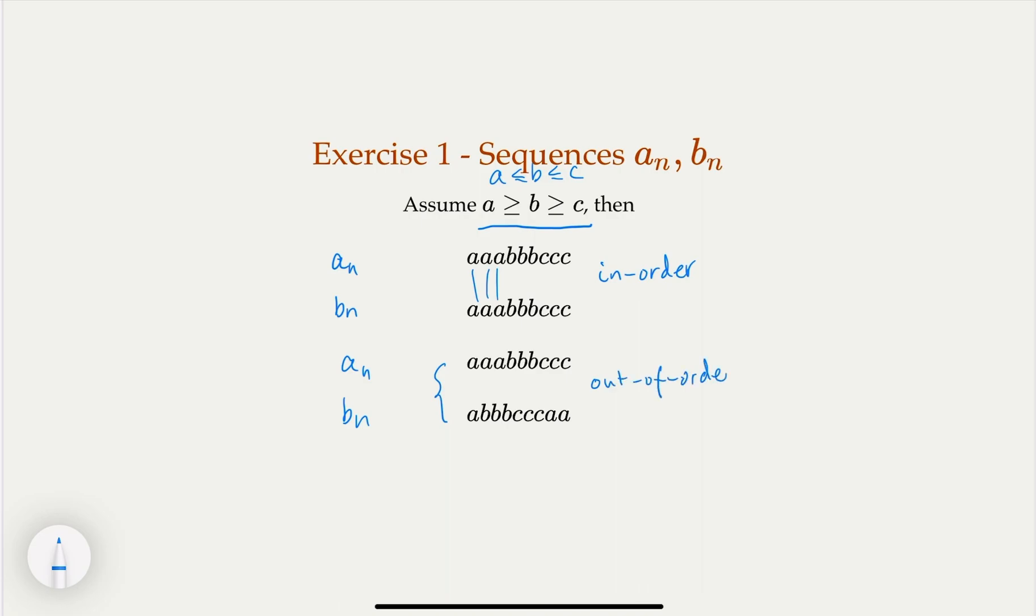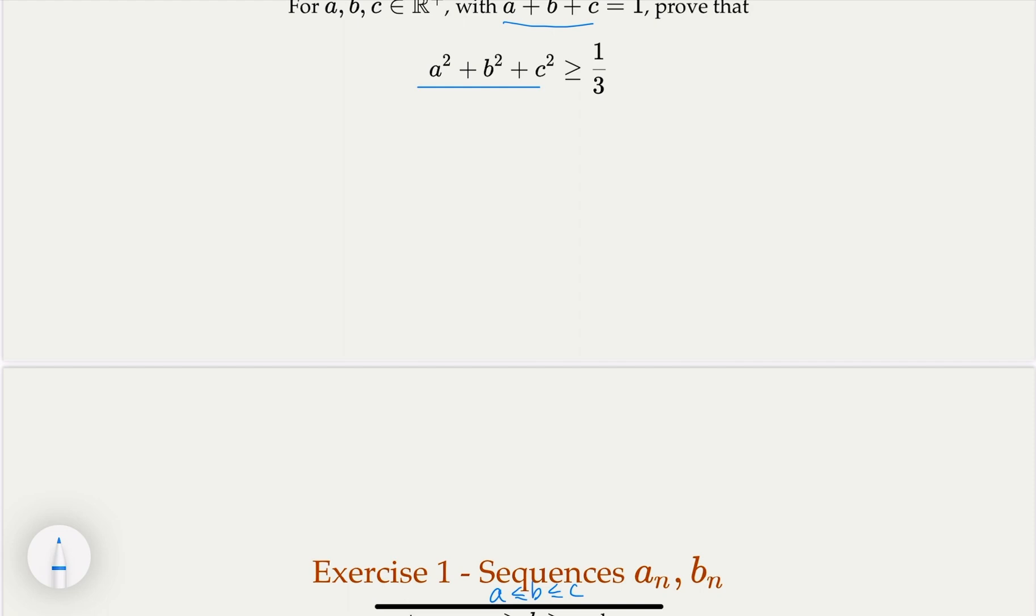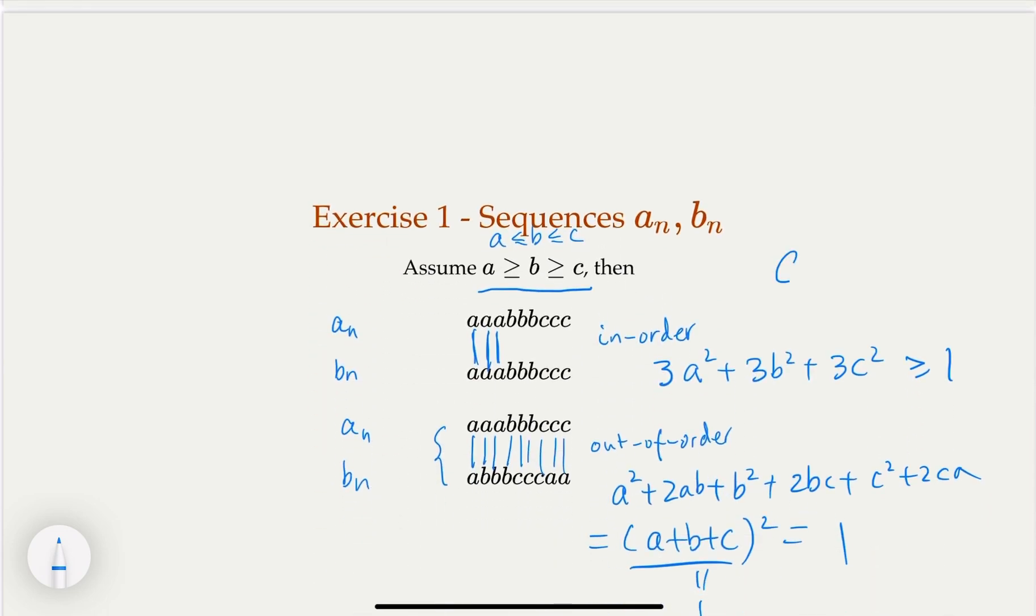So what is in-order here? This is going to be 3a² + 3b² + 3c², because a² times a² times a² equals 3a². And here is a² + 2ab + b² + 2bc + c² + 2ca. So that exactly equals (a + b + c)². And then, of course, we're given that this is equal to 1. So the whole thing is equal to 1. And we're saying that the in-order is greater, so this is greater or equal to 1. So we're done, because we are asked to prove a² + b² + c² greater than one-third. You just divide by 3, so it's a² + b² + c² ≥ 1/3. That's the first example.